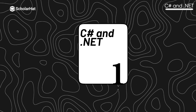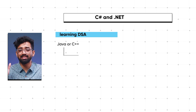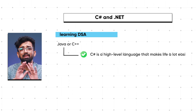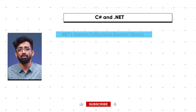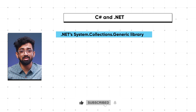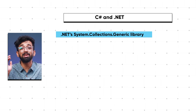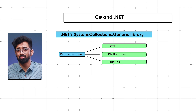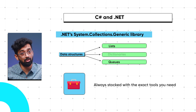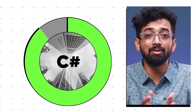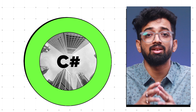So why is it that some folks swear by C++ for DSA while others champion Java, and where does C# fit into all of this? Let's get started. First off, let's chat about C# and .NET — why does learning DSA in this environment hold its own against Java and C++? C# is a high-level language that makes life a lot easier with its built-in libraries and features. For instance, the .NET System.Collections.Generic library is a treasure trove of pre-built data structures like lists, dictionaries, and queues — it's like having a toolbox that's always stocked with the exact tools.